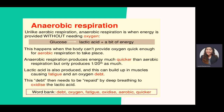This happens when the body cannot provide oxygen quickly enough for aerobic respiration. Anaerobic respiration serves as a backup — if aerobic respiration cannot immediately occur, anaerobic respiration takes over. In terms of practicality, anaerobic respiration is much quicker than aerobic, since aerobic has several stages while anaerobic only requires glycolysis. However, a buildup of lactic acid can cause fatigue, oxygen debt, and muscle cramps.